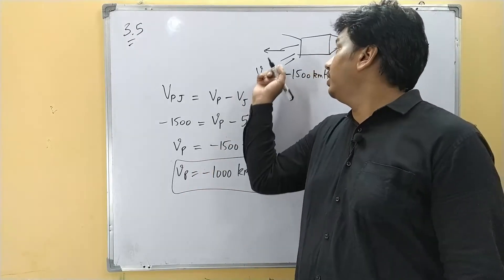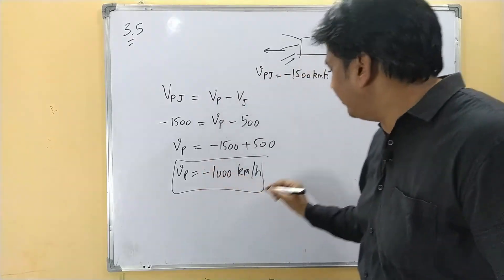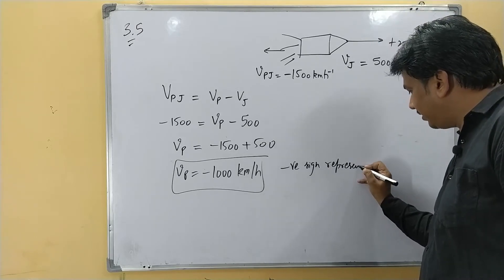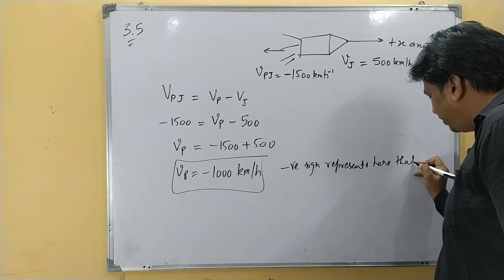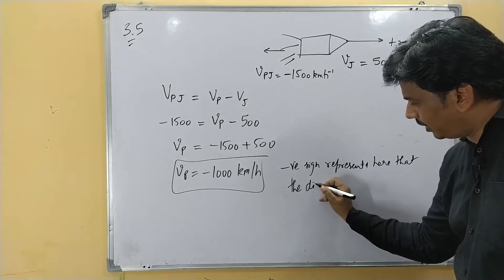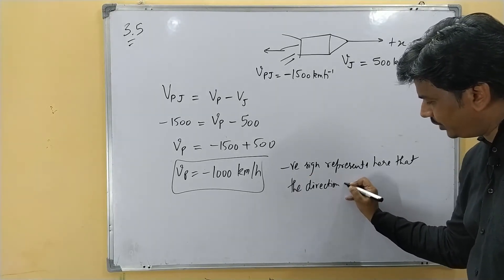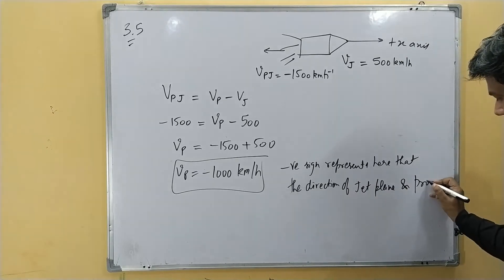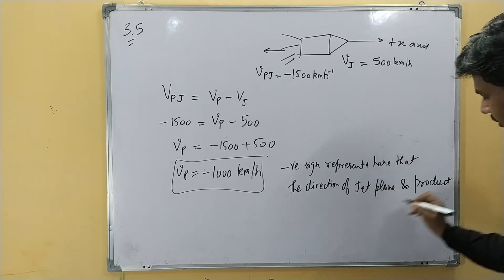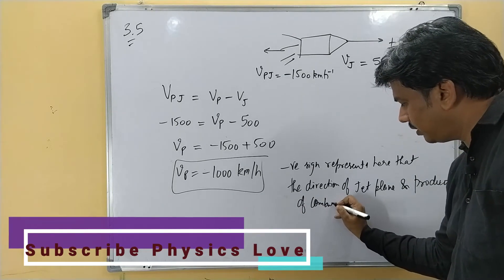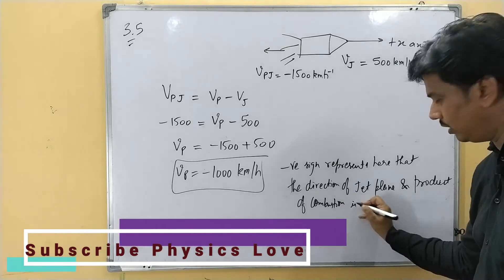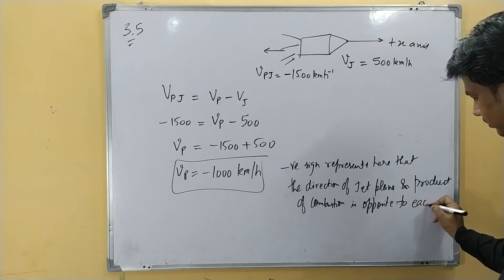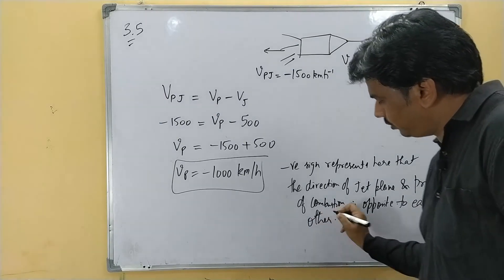Yes, product is going in minus x-axis and this negative sign represents that the direction of jet plane and product of combustion is opposite to each other.